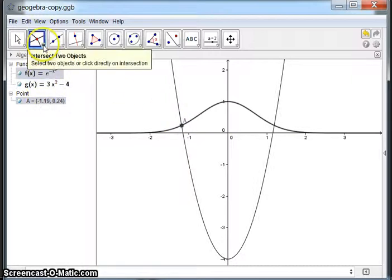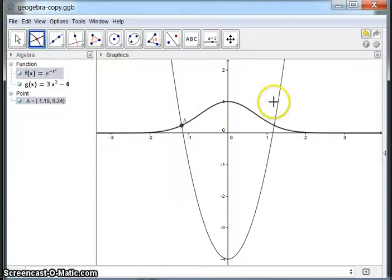And you can see it's picked up one point of intersection. Let's see if we can pick up the other point of intersection. So again I will try it over here, try that one. There we go. So now I've got the two points of intersection.